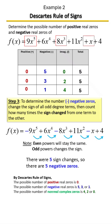So by Descartes' Rule of Signs, the possible number of positive zeros: there are none — zero. Negative zeros: five, three, or one. No real complex zeros: four, two, or zero.